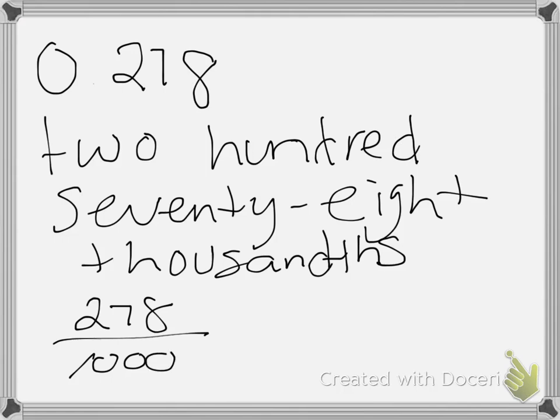My fraction would be 278 over 1,000. Why? Because thousandths is right here. Why is it 278 thousandths? Because if I was using the hundreds grid, and I had a thousand of them, I would have to color in 200, and then 70, and then 8.